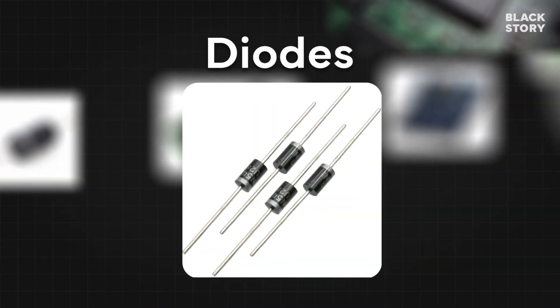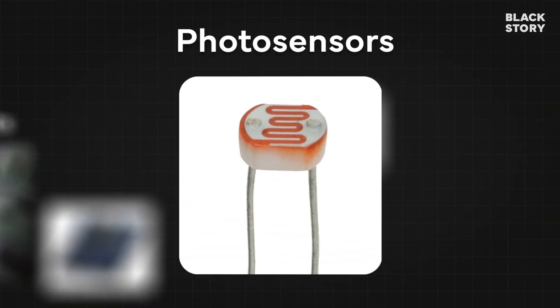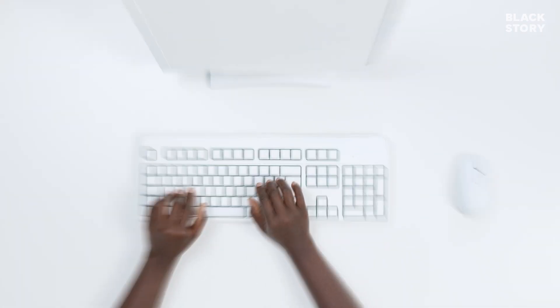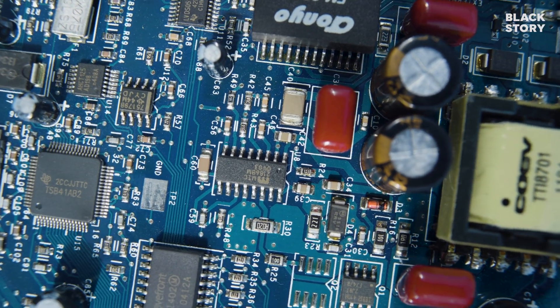Transistors, diodes, integrated circuits, photosensors, memory units, and graphic processing units used in computers and many other electronic devices are made up of semiconductors.